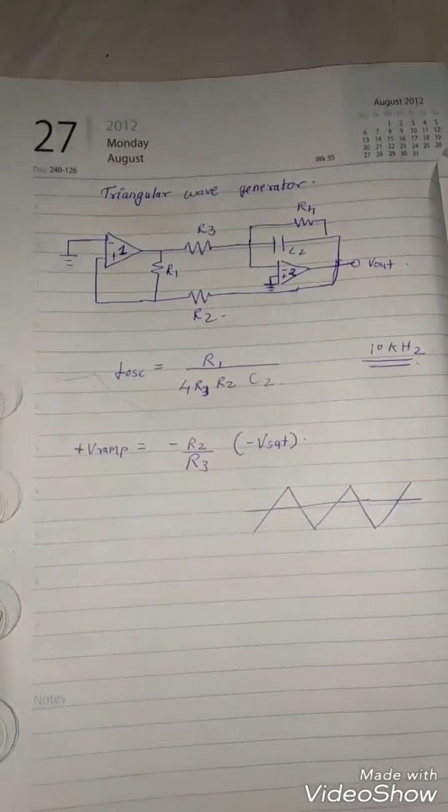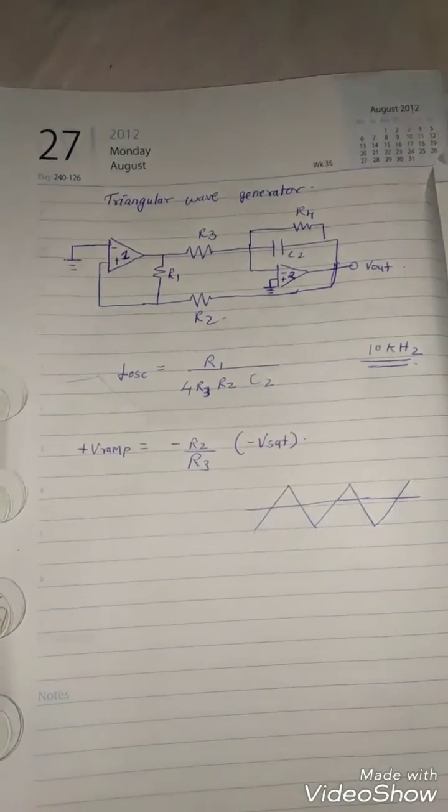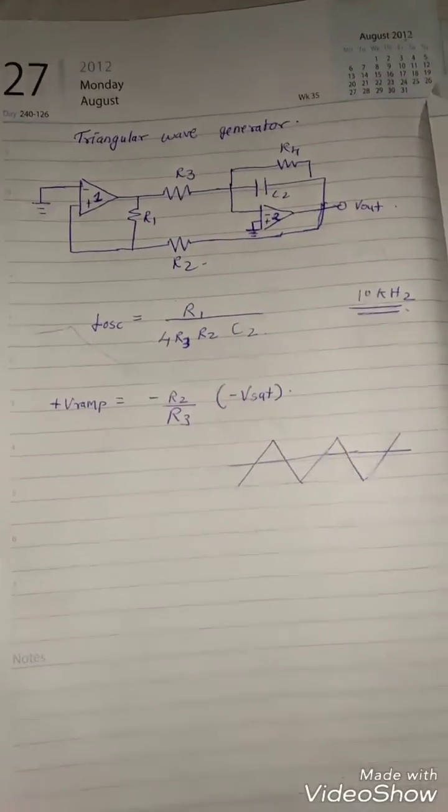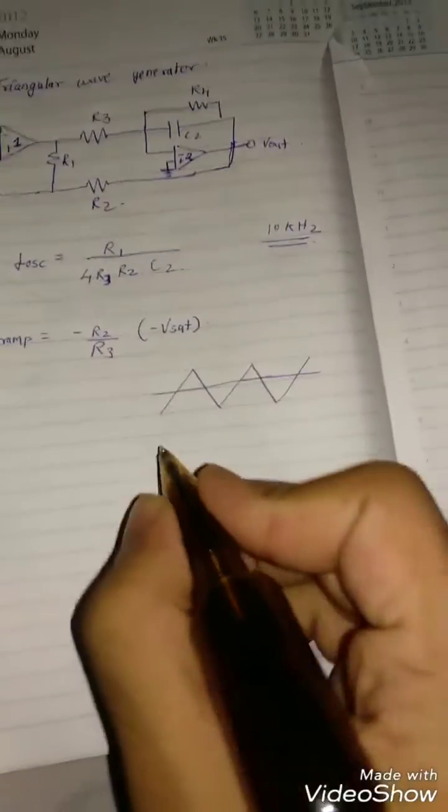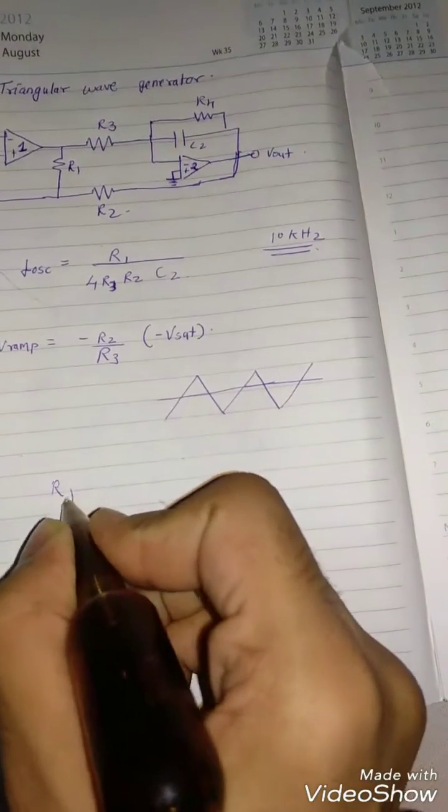Now R4 is just for avoiding low frequency problems, so R4 can be assumed as anything around 10 kilo ohms. So let's assume R4 as 10 kilo ohms.